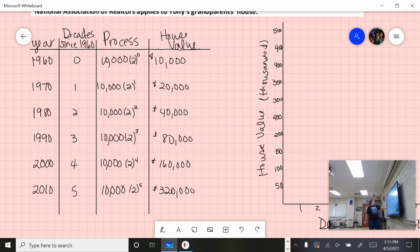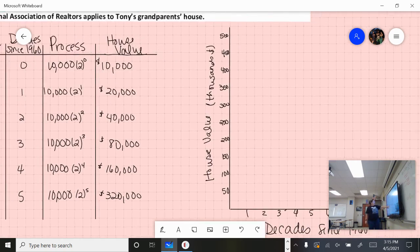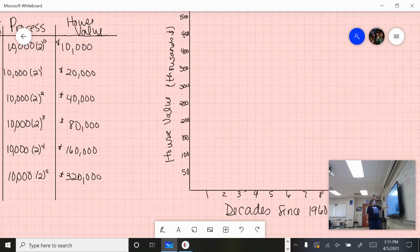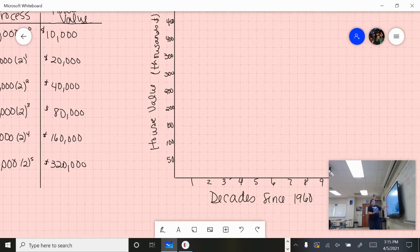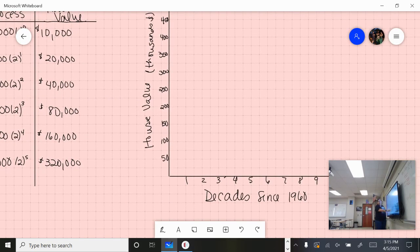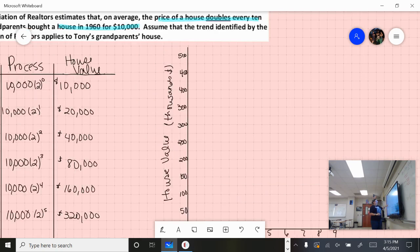Now we're going to graph this. As you can see, my x-axis is decades since 1960, my y-axis is the house value in thousands. I've labeled every other line in increments of $50,000. It's easier to see them that way. If I tried to label every line, it wouldn't be very easy to read.